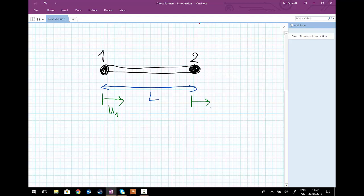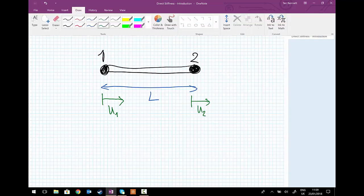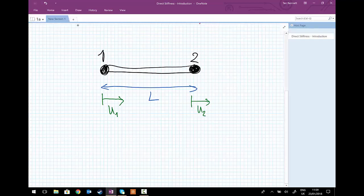It's also possible that this bar could be subject to two external forces. And so at node 1, we can have an external force F1 again in the positive x direction. And a force F2 in the positive x direction at node 2 on the right-hand side.